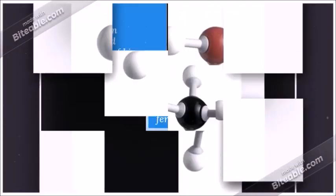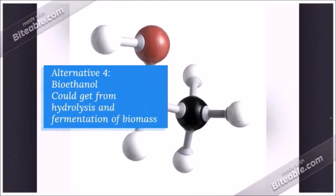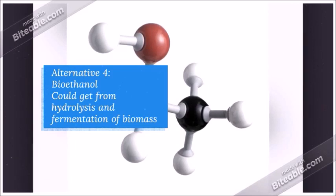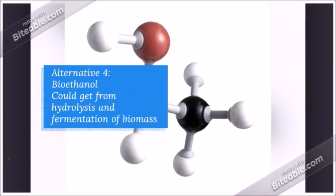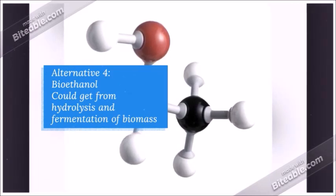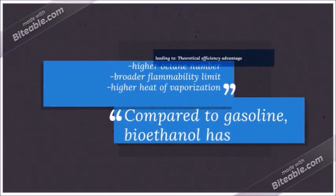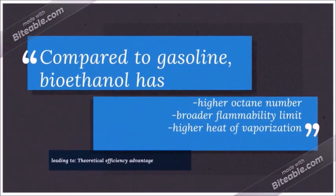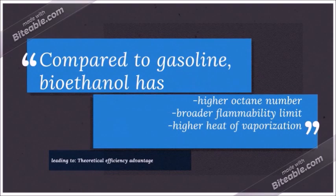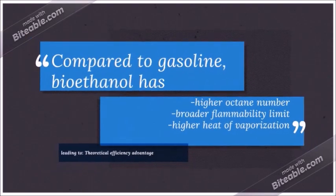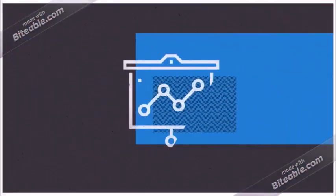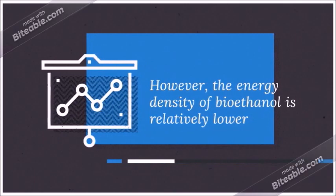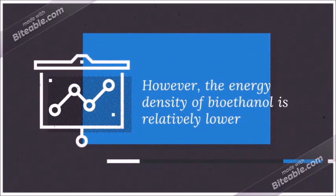The next alternative energy is bioethanol. We can produce bioethanol through a hydrolysis technique, and the feedstock used is just biomass. Bioethanol is used to replace gasoline as it has higher octane numbers, broader flammability limits, and higher heat of vaporization. The drawback is that it has lower energy density compared to gasoline.